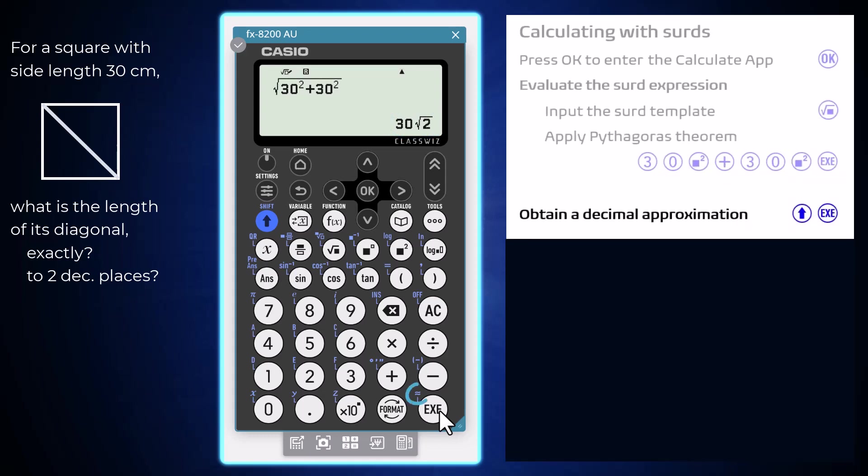To see the decimal approximation of this value, press the shift key and the execute key. This approximately equals to key combination can be used any time a decimal approximation is required instead of an exact value.